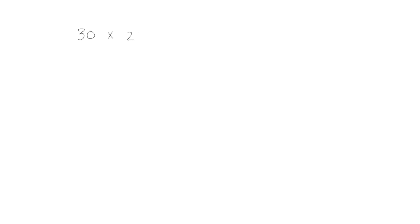Let's start with 30, which is a multiple of 10, times 20, which is a multiple of 10. Let's break 30 down into 3 times 10, and let's break 20 down into 2 times 10. We know in multiplication we can change the groupings without changing the answer. So let's change the groupings and have 3 times 10 times 2 times 10.